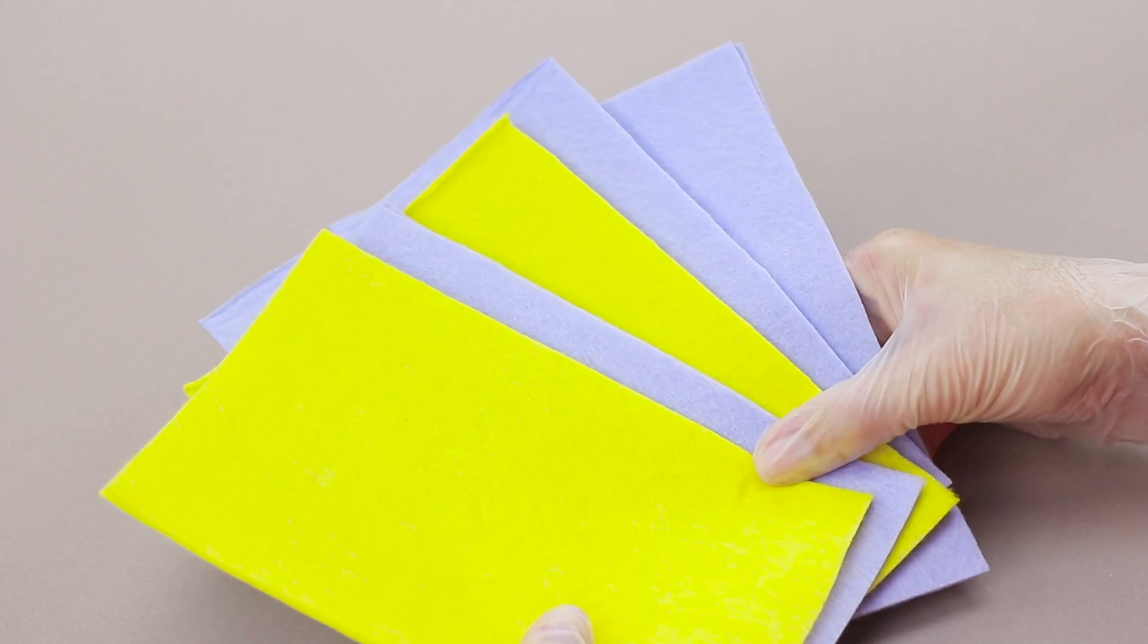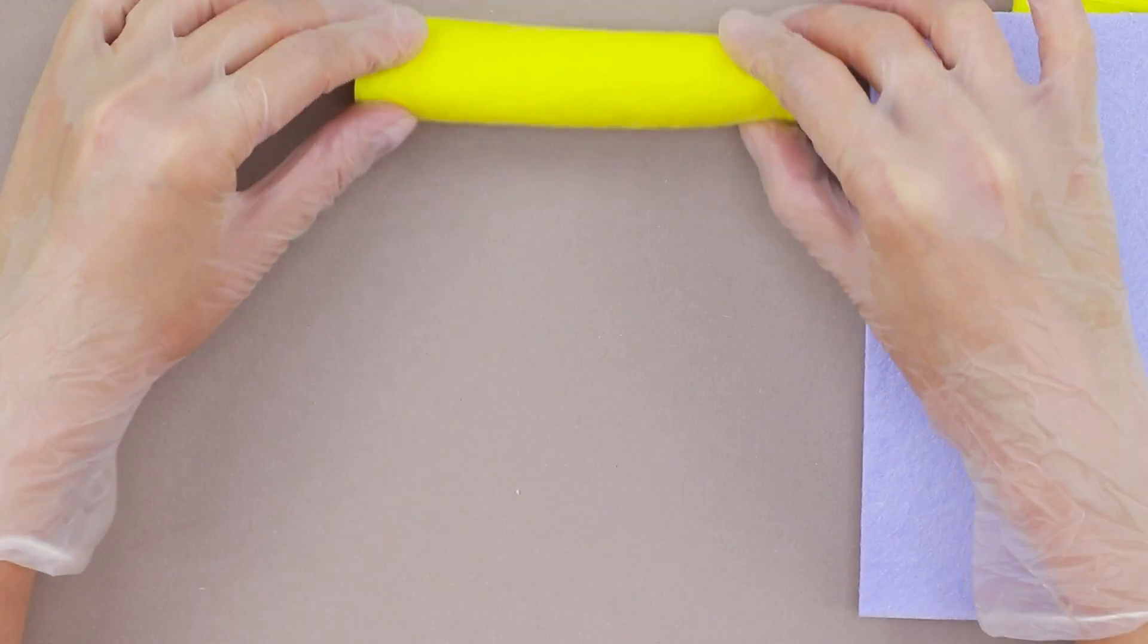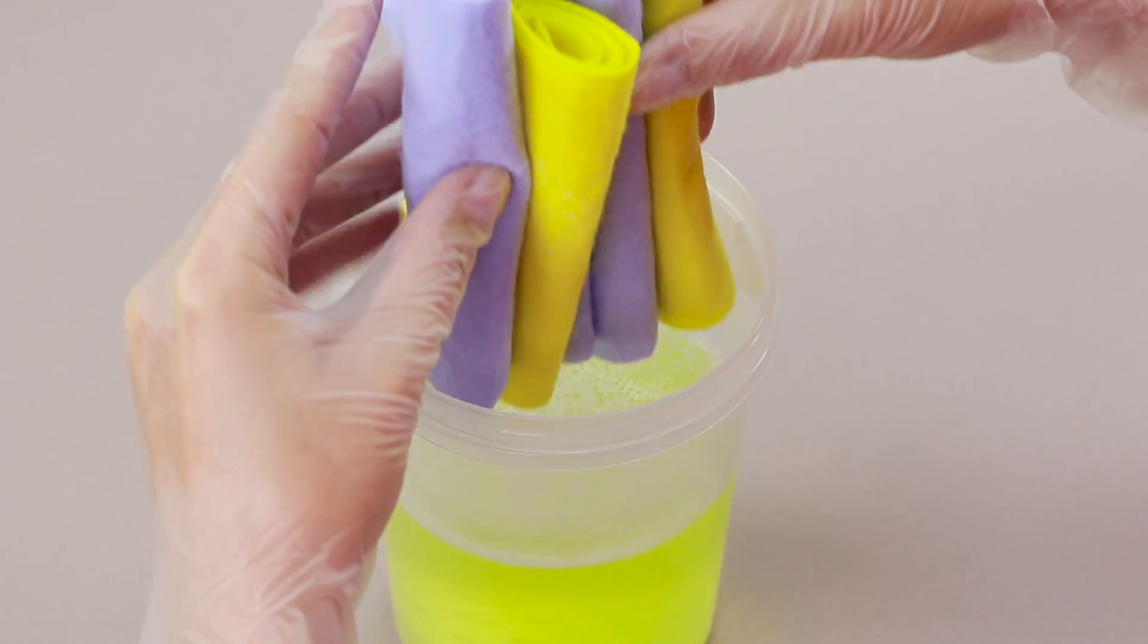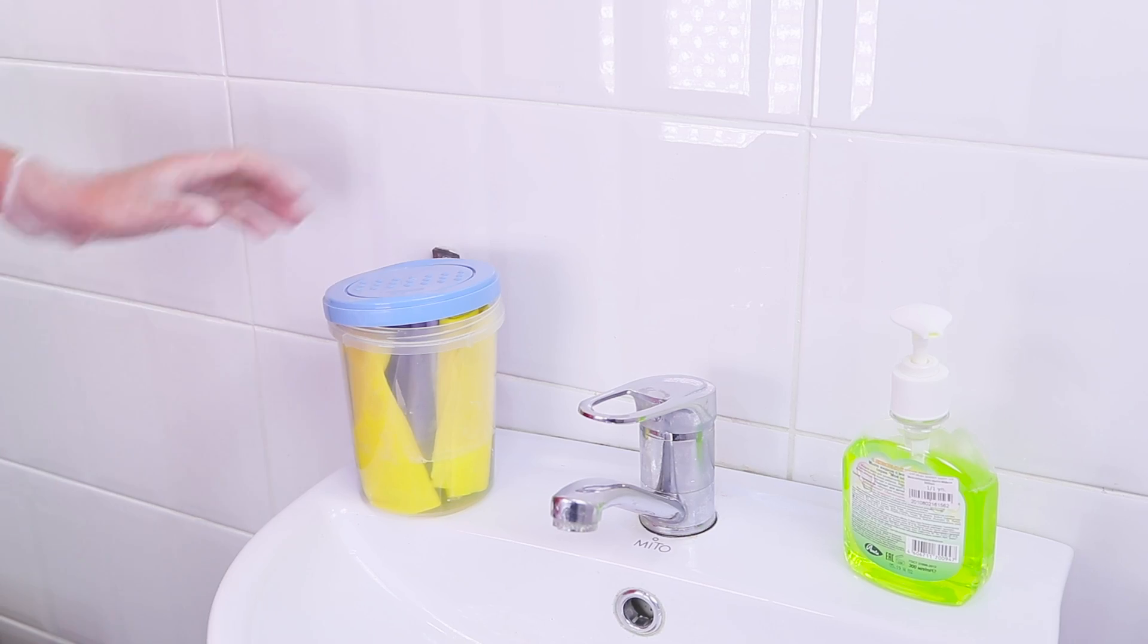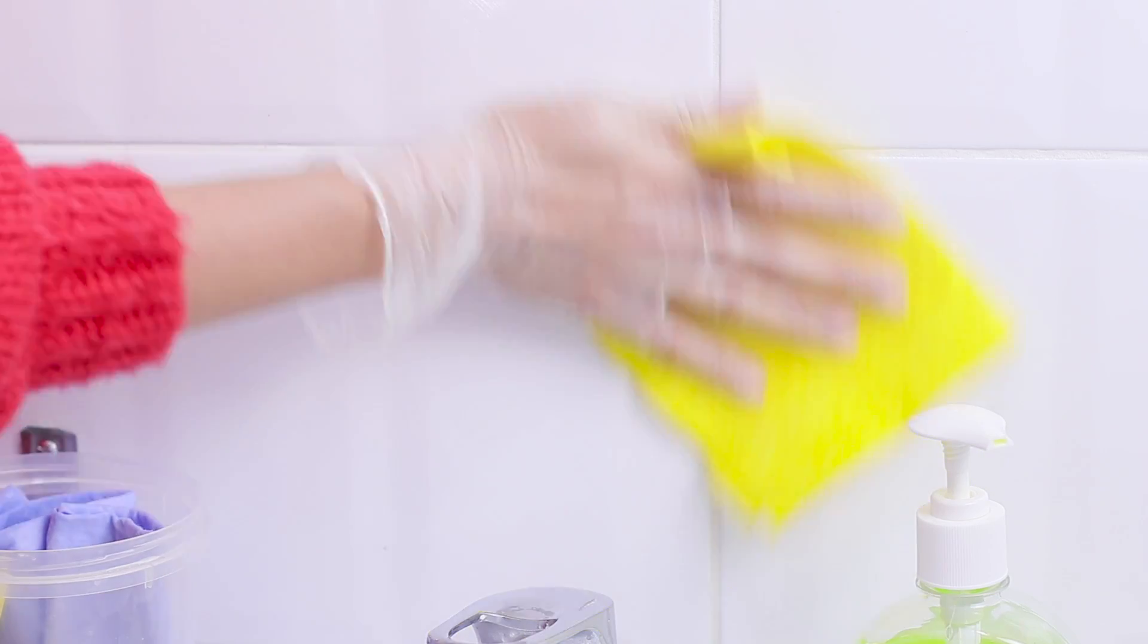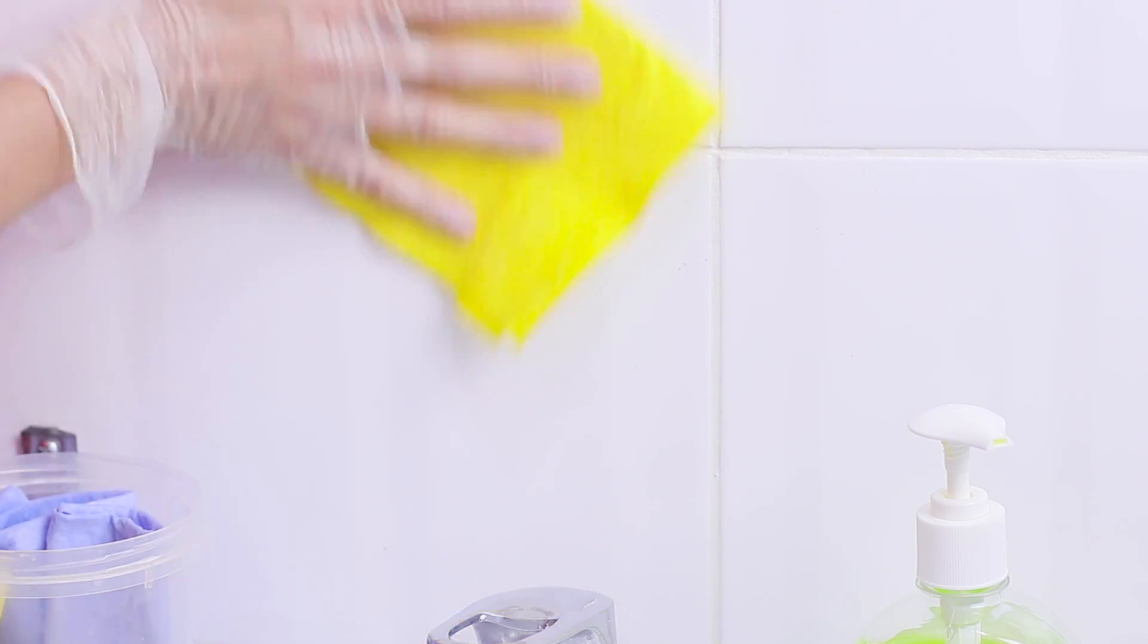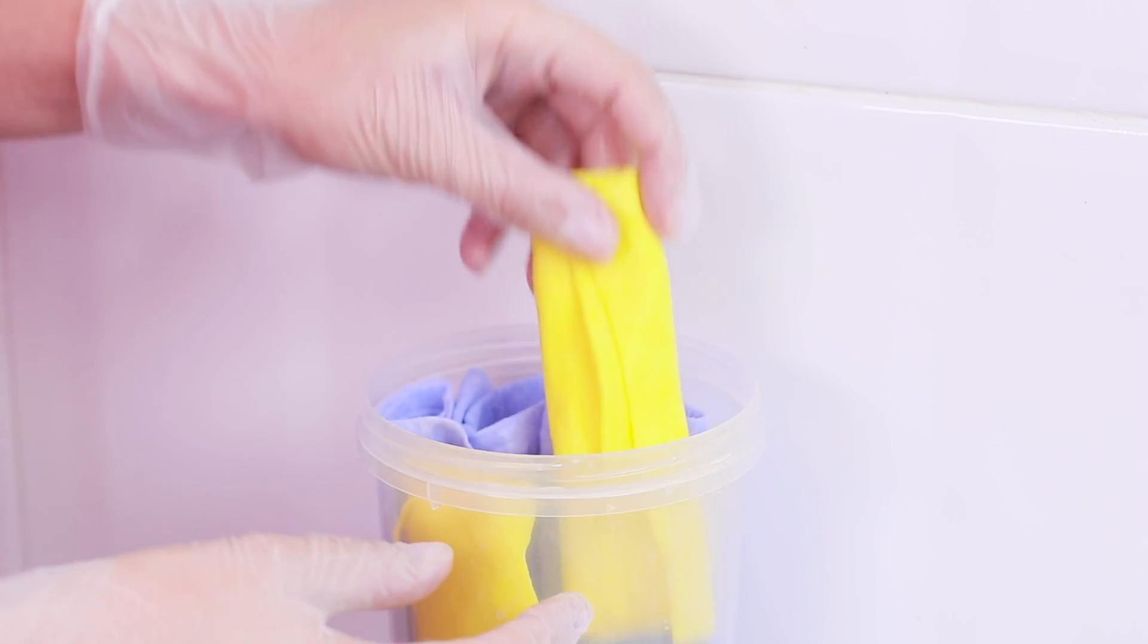Cut cleaning rags into small pieces. Roll them up. Put the rolls in the solution. Close the container. Look at that! Reusable cleaning napkins for you to use! And most importantly, they are nice and soaked in the detergent! Cleaning doesn't seem so dirty anymore, does it?